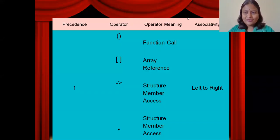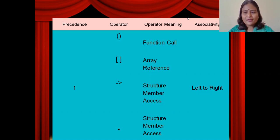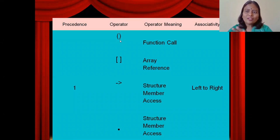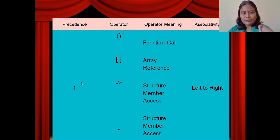Now we are going to look at all the operators available in C language. We are going to discuss about precedences and associativity of each and every operator. Among all the operators in C, the parenthesis has got the highest priority. Parenthesis is also considered as an operator — it involves in the process of evaluation, so it is called an operator. This parenthesis has got the highest precedence.